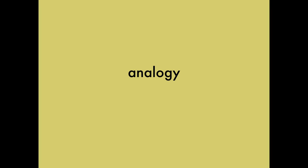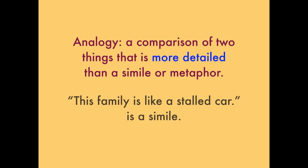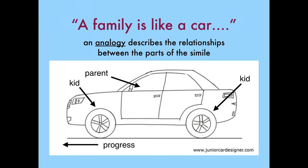An analogy is a simile on steroids. If you said, this family is like a stalled car, that's a simile. But if you went on to say: a family is like a car — the parent is like the steering wheel, because he or she directs the car, but the kids are like the wheels. If the wheels won't move, the steering wheel is powerless and no one is going anywhere. So we need to work together if we want to move forward. When you explain the relationship between the parts of a simile in detail, it becomes an analogy.